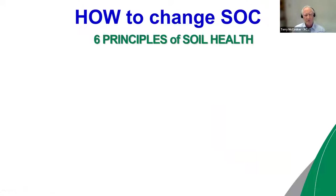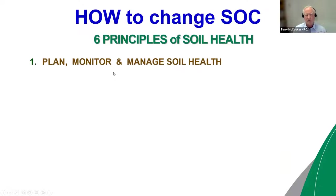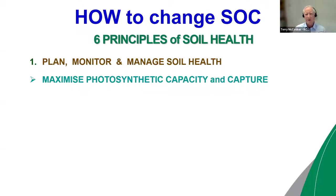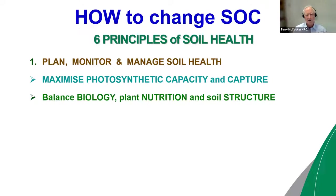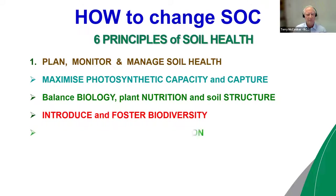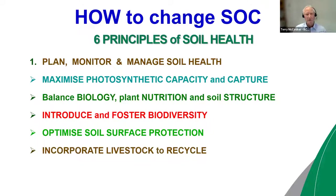How do we go about changing soil organic carbon? It comes back to managing soils and the management practices we put on those soils. The soil health principles we run by are: plan for it, monitor it, and manage it — it won't happen by itself. Maximize photosynthetic capacity and capture of sunlight. Balance biology, plant nutrition, and soil structure — no one of those by itself is going to drive the system forward. Introduce and foster biodiversity. Optimize soil surface protection to provide food and shelter for the soil biology. Incorporate livestock, which recycles carbon much better.